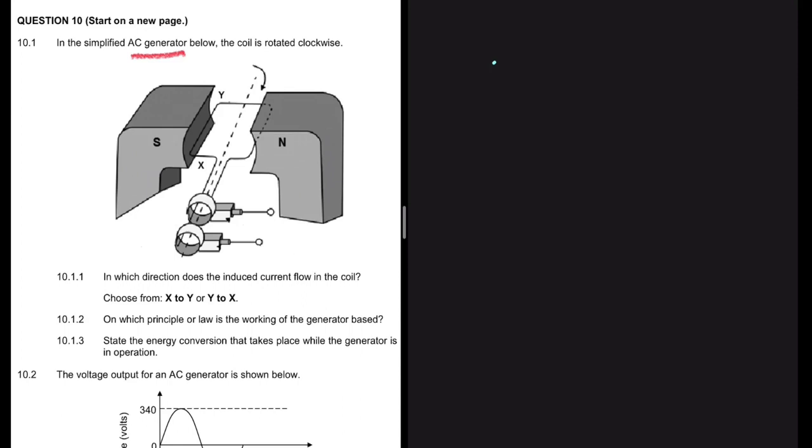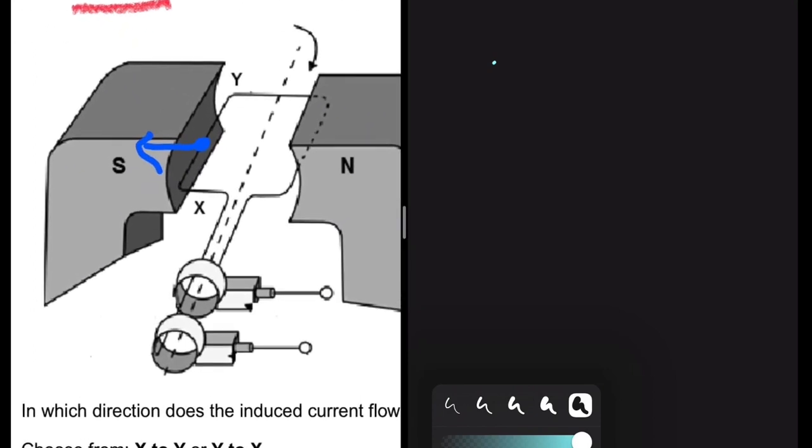All motors use the left-hand rule and all generators use the right-hand rule. You have to place your hand on the side of the coil we are interested in. Here we are interested in Y and X. You point from north to south with your index finger. Your thumb shall be perpendicular to your index finger and shall point in the direction of the force.